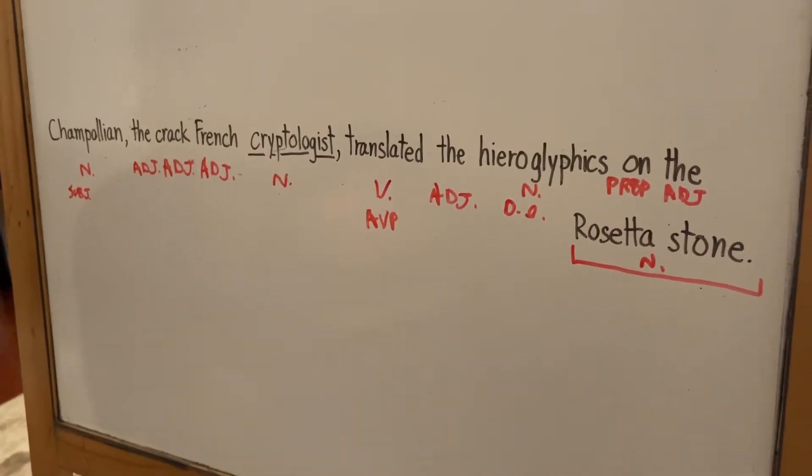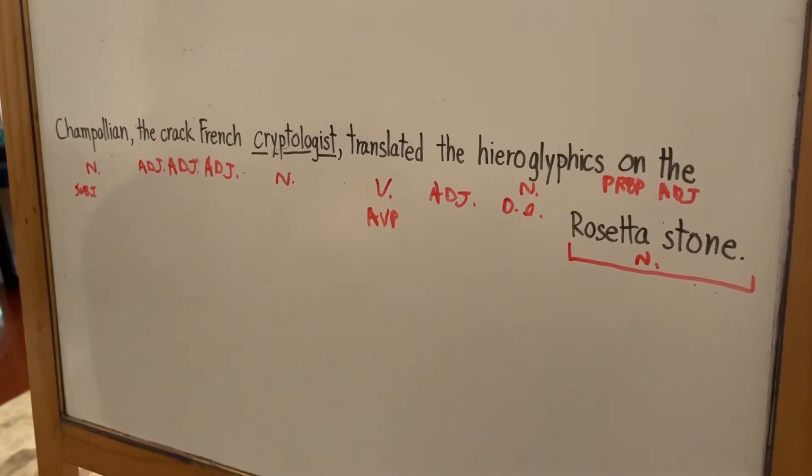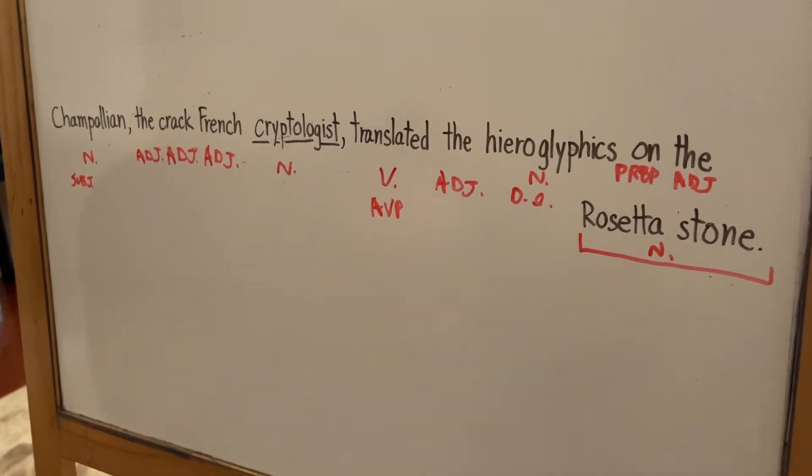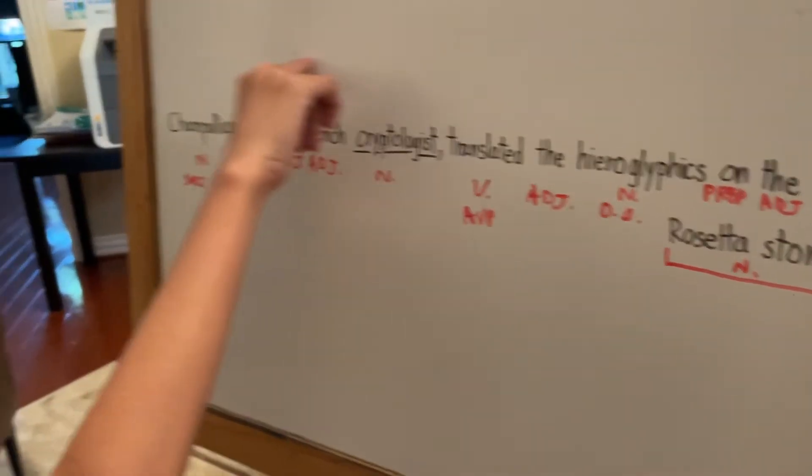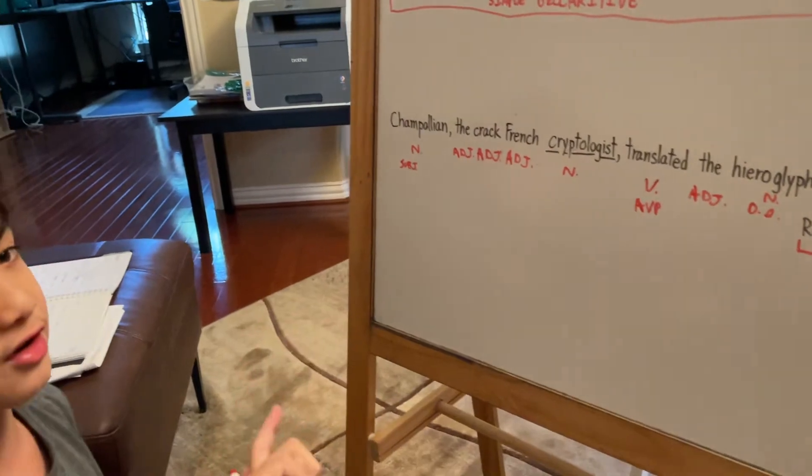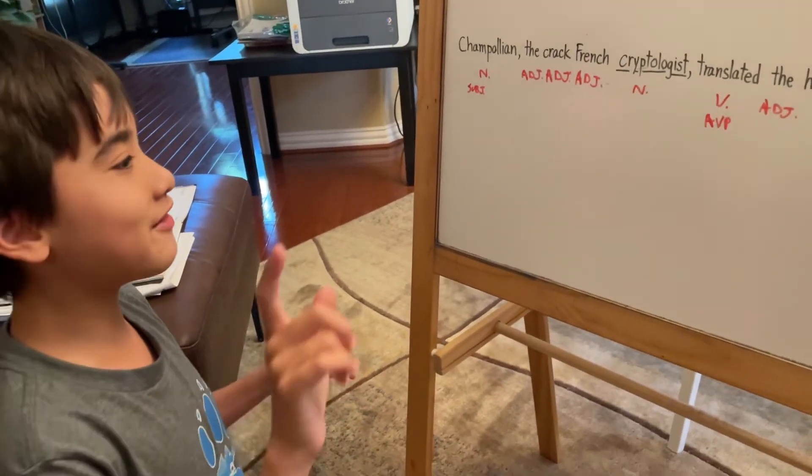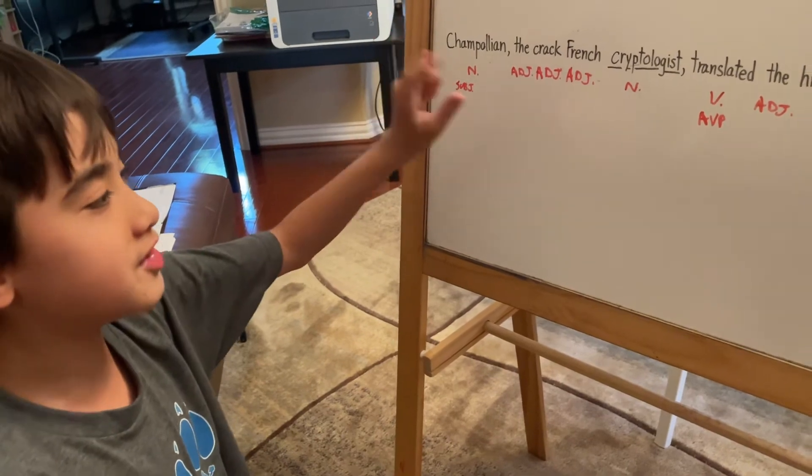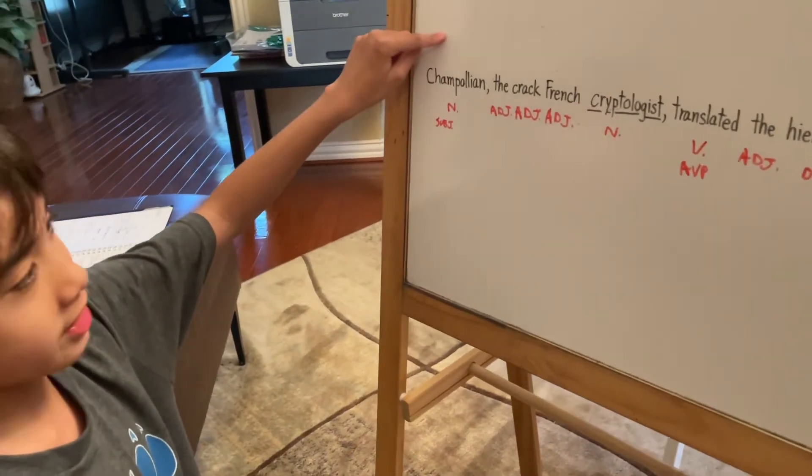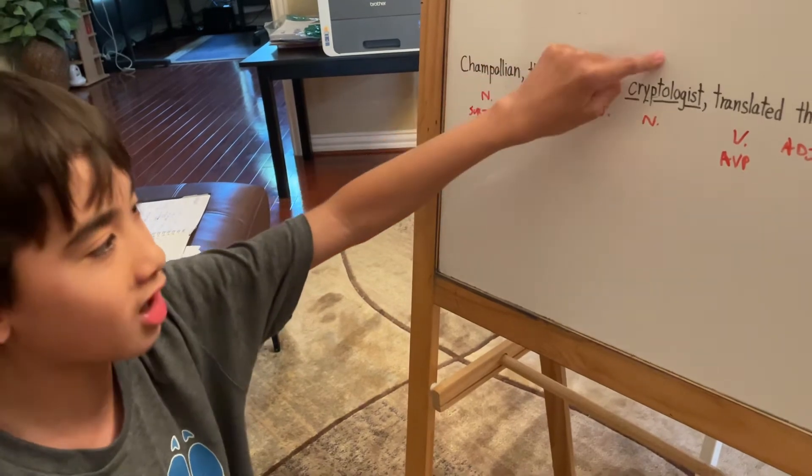And now we're moving on to our third level—clauses. So we're going to introduce a new type of clause for this sentence. 'The crack French cryptologist' is an appositive phrase. An appositive phrase interrupts the sentence usually to bring you a definition of a noun. Who is Trampoleon? Well, he's the crack French cryptologist.